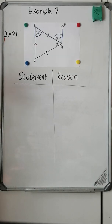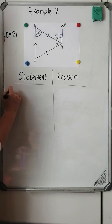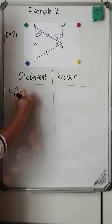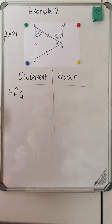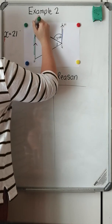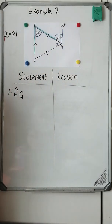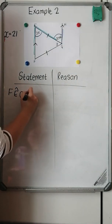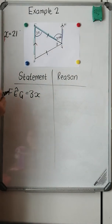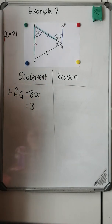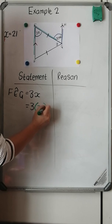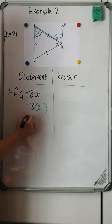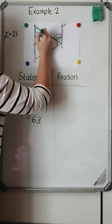If x equals 21, angle FEG is 3x. Substituting 21 in place of x: 3 times 21 gives 63. So this corner here is 63 degrees. I've worked that out because y is inside a triangle, and if I'm dealing with inside angles of a triangle, there is a property for that.